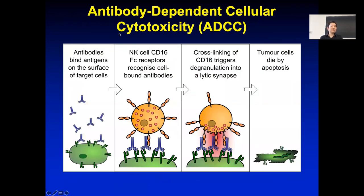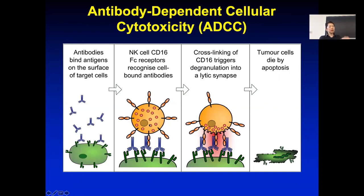A third way natural killer cells kill is antibody-dependent cellular cytotoxicity, or ADCC. If on the cancer cell surface there are unusual proteins, lipids, or sugar molecules, they can be recognized by antibodies. Depending on the constant region — IgG1 and IgG3 are important — they can interact with a receptor called CD16 and that will recruit the natural killer cells. The natural killer cells can then secrete cytokines to kill the cancer cells.